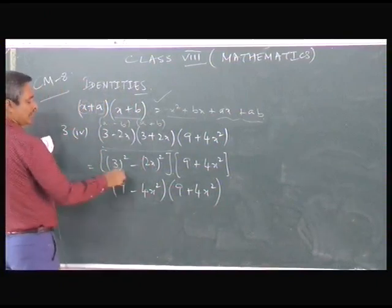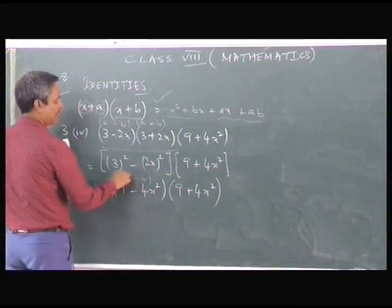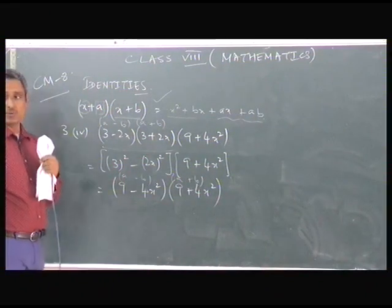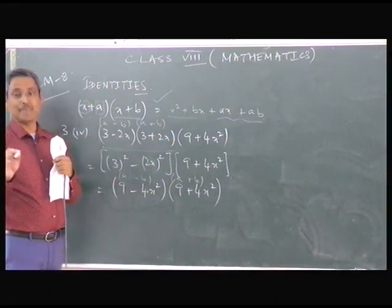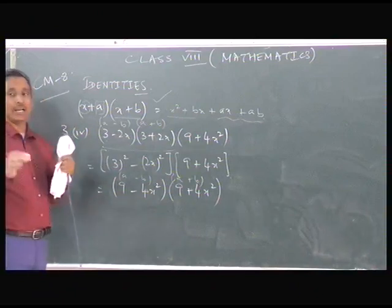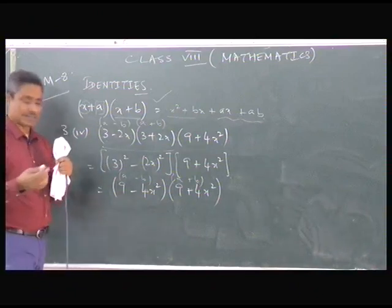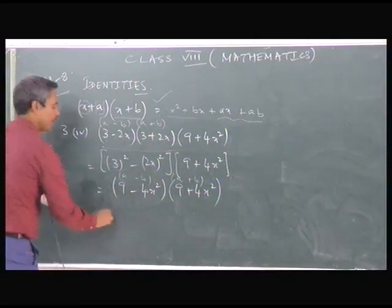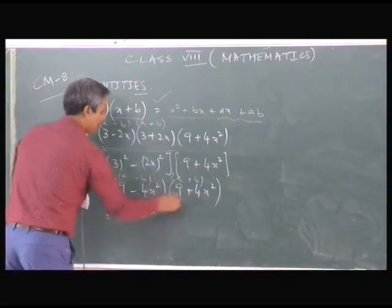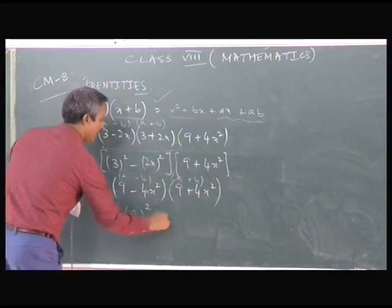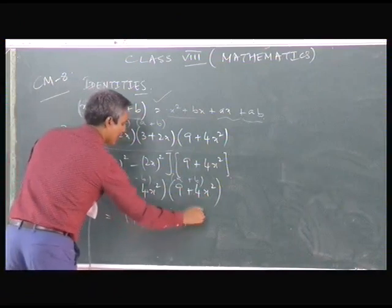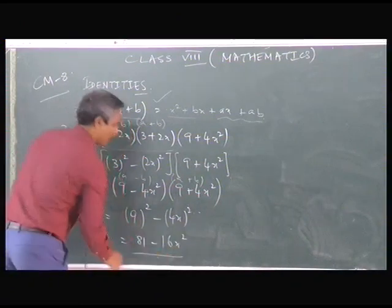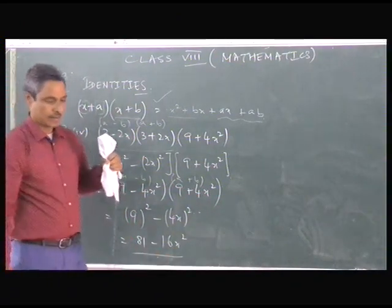Again looking at (9 − 4x²)(9 + 4x²), this is again in the form (a − b)(a + b). You don't have to write this in the exam, but during practice you may want to highlight it. Applying the formula: a² − b² gives us 81 − 16x⁴ — wait, 9² − (4x²)² = 81 − 16x⁴. So the final answer is 81 − 16x⁴.